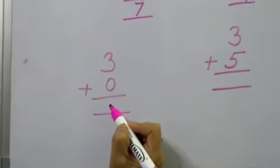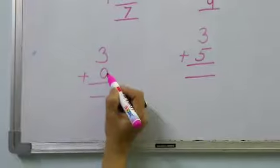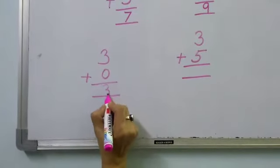Now, 3 plus 0. 0 means no number. So, 3 plus 0 is 3.